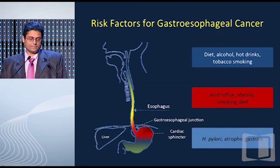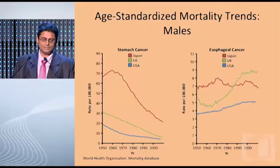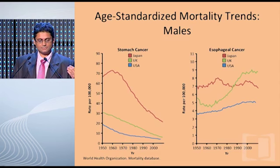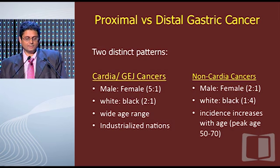Risk factors differ across esophagus and GE junction tumors: diet, alcohol, and hot drinks for esophageal cancer; acid reflux, obesity, and smoking for GE junction tumors; H. pylori and atrophic gastritis for distal gastric cancer. We can't really group these tumors similarly — they have different epidemiology and different risk factors. The incidence of stomach cancer is decreasing throughout the world, as shown in data from Japan, the UK, and the U.S., whereas esophageal cancer is actually rising in much of the world.